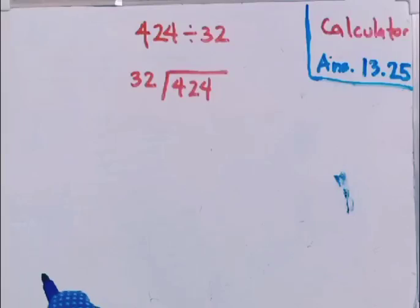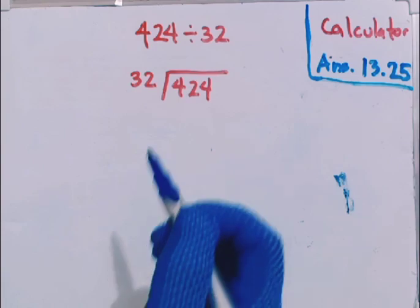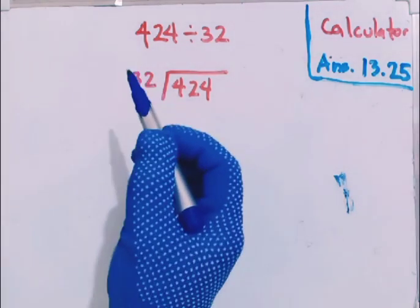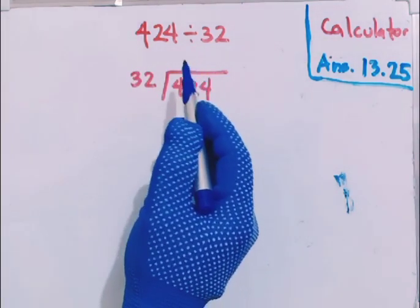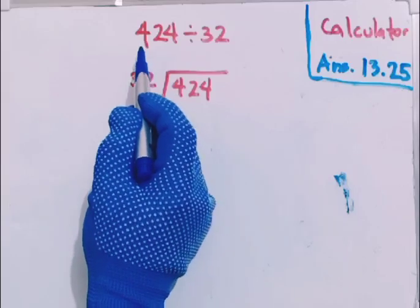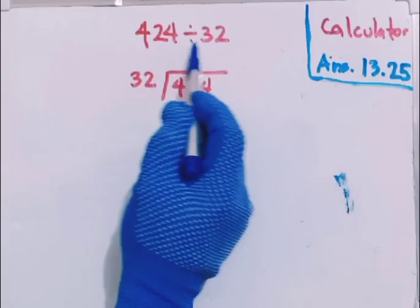In this video, I'm going to share with you how to solve whole number division. We will do this manually. Before we begin, I would like to label the names of this whole number. The first number here is 424 divided by 32.